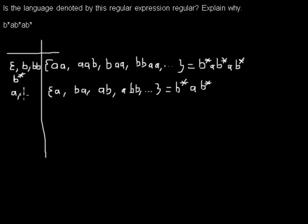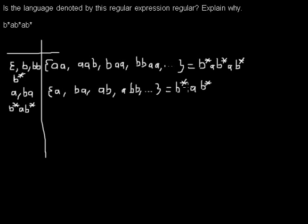Let's take another word: BA. That is also a word that includes one A and it's not in the language because it still has one A too few. I would have to append one A, or any number of B's as long as I append one single A, to get my two A's total. Summing those words up, that would be any word from B*, A, B*. So if I have any word that contains one A, I have to append any word that contains another A to get a word from the language.